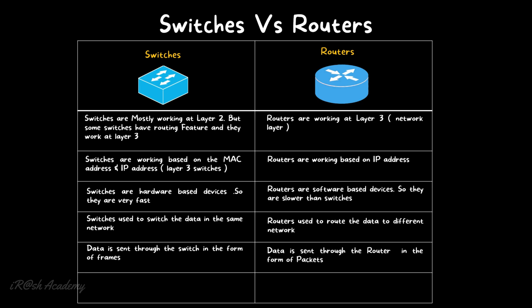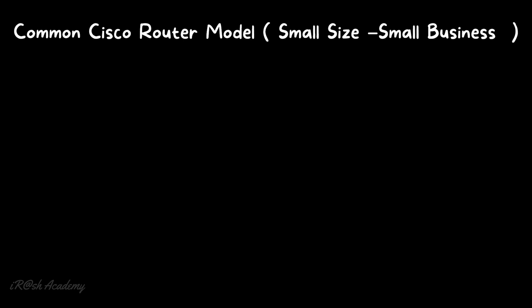Another difference: data is sent through a switch in the form of frames, but data is sent through a router in the form of packets. When a switch processes data it is called frames; when a router processes data it is called packets. Switches are used to connect multiple devices together within a network, while routers are used to connect multiple networks together.